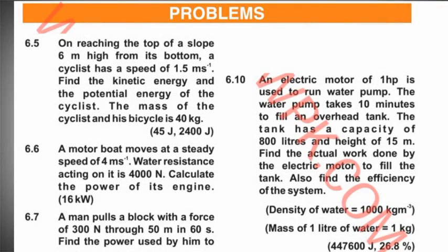Now come to numerical number 6.5. On reaching the top of a slope 6 meters high from its bottom, a cyclist has a speed of 1.5 meters per second. Find the kinetic energy and the potential energy of the cyclist. The mass of the cyclist and bicycle is 40 kg.